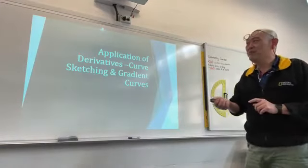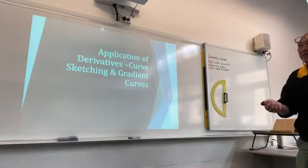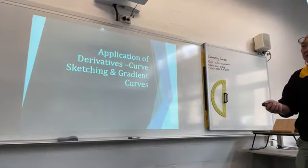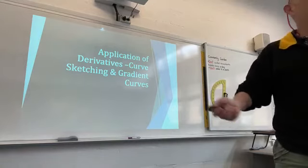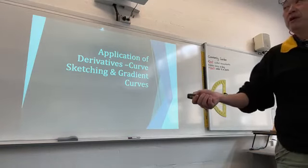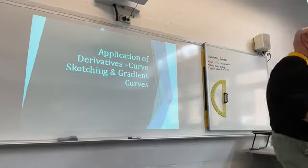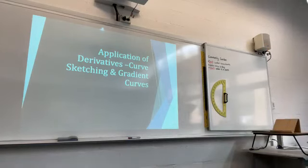On the whiteboard, you're going to think about the gradient: positive, negative, and zero. Zero is actually the stationary points — could be maximum, could be minimum, could be horizontal point of inflection. You need to think about what the gradient looks like when it's positive, negative, and zero.